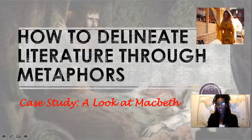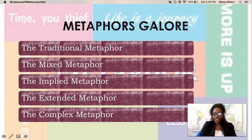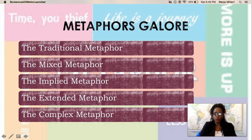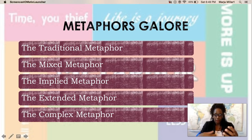There are so many variations of metaphors used in literature — the list is endless. Today I'm going to introduce you to five different types. You're probably already familiar with the traditional metaphor, where you make comparisons using two different things that are not very much alike. Then you have the mixed metaphor, where you have more than one metaphor in a piece of work, creating a somewhat ridiculous effect.